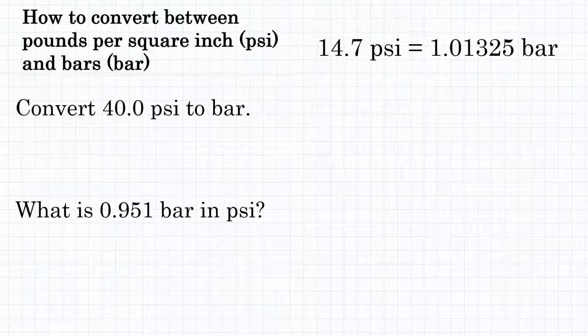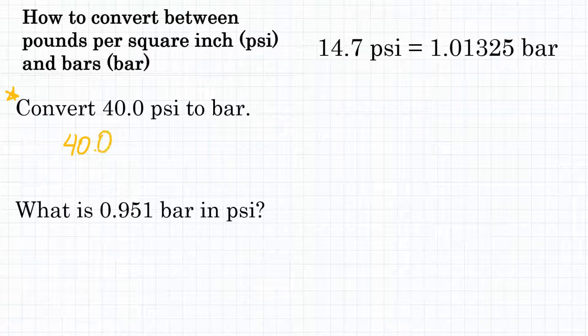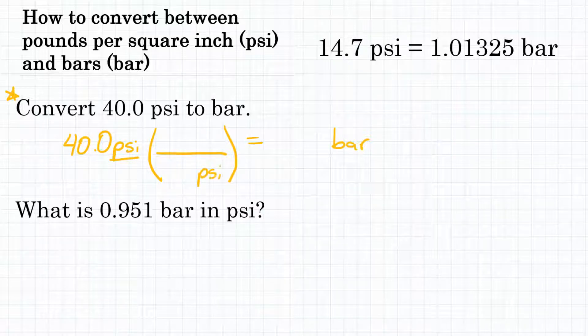So let's look at this first problem here that says convert 40.0 PSI to bars. We're going to start with 40.0 PSI and figure out how many bars that is equal to. This is a dimensional analysis, one step conversion problem, where we're going to multiply by a conversion factor, which is a fraction that relates PSI and bar. Since we're starting with PSI, we're going to have PSI on the bottom of our conversion factor. And since we want bar in the end, we're going to have bar on top of our conversion factor.